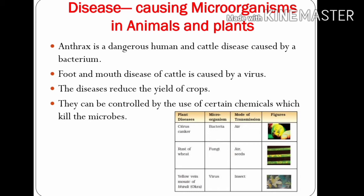A table is given about plant diseases, the microorganisms that cause them, and their mode of transmission. Citrus canker is caused by bacteria and spread through air. Rust of wheat is caused by fungi and can be spread by air as well as seeds. Yellow vein mosaic of bhindi (okra) is caused by a virus and its mode of transmission is insects.